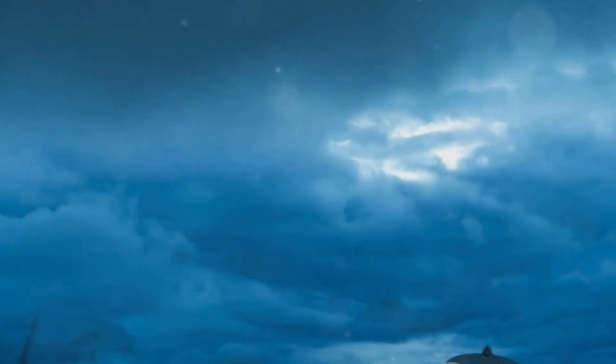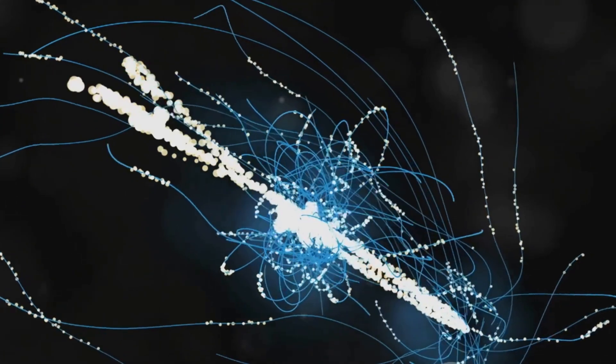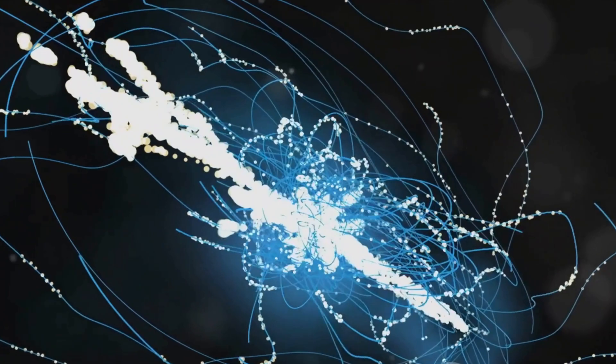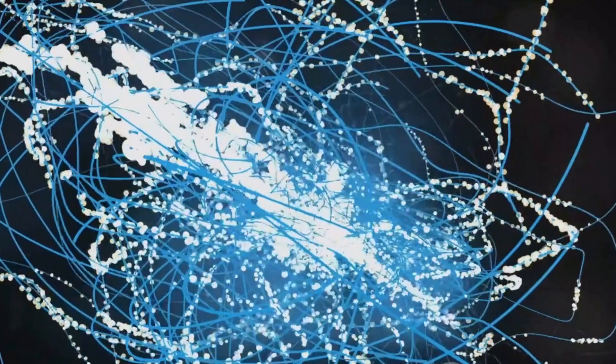Let's not forget our cell phones, our constant companions. The signals that connect us to each other could become erratic during a solar storm, causing dropped calls and slow data. In our interconnected world, the impact of such disruptions would be widespread and immediate.